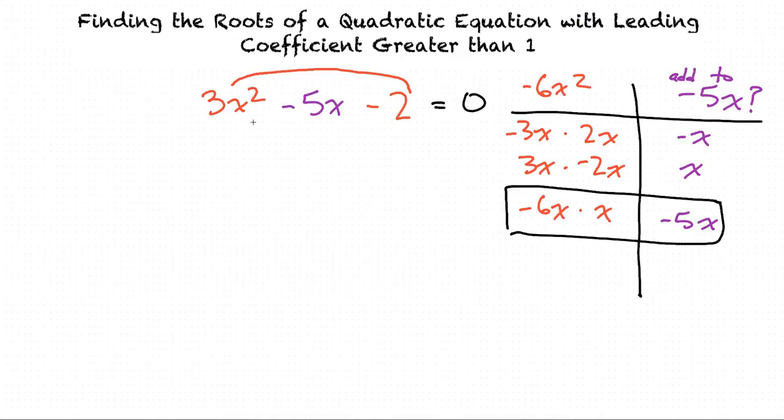We will now factor this quadratic by grouping. So we'll rewrite this as 3x² - 6x + x - 2. The -6x and x come from here, and we add them together to equal -5x. So now we're replacing -5x with these two.